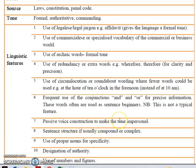Seventh: passive voice construction to make the tone impersonal. Passive voice construction is O-V-S: the object, then the action word (the verb), then the subject. For any passive voice construction, it automatically becomes impersonal because the receiver of the action is taking precedence rather than the subject.